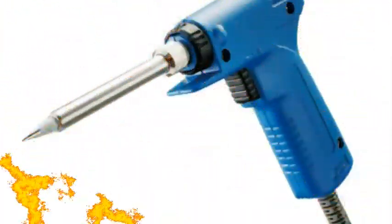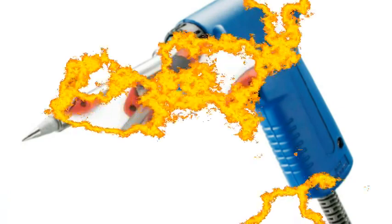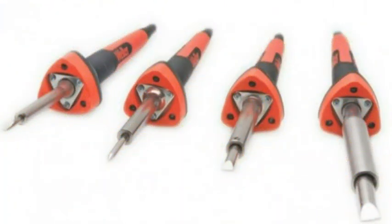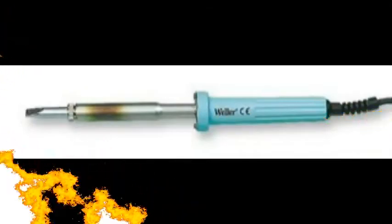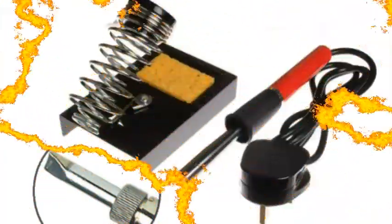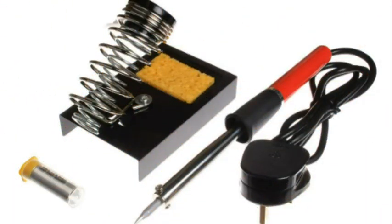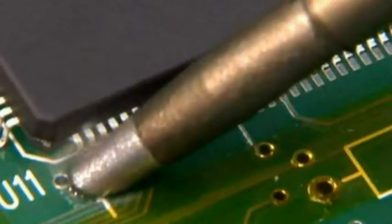Conical tip - Conical tips are usually used for precision electronics work, though they're also often used for general soldering. The pointed tip helps deliver heat to small areas such as tiny surface mount components.